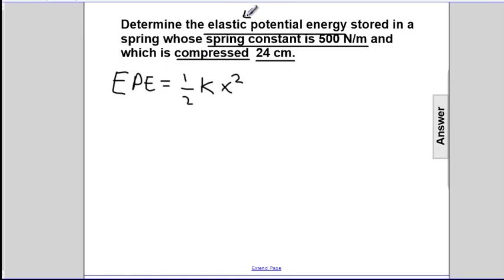EPE is one-half k x squared, where elastic potential energy is EPE, the spring constant is k, and the compression is x. One minor thing, we need to express the compression in meters, and that value for x will not be 24 centimeters, it's 0.24 meters.